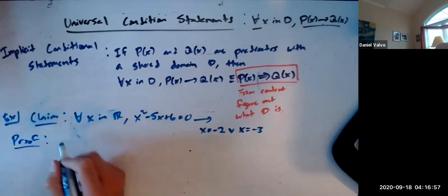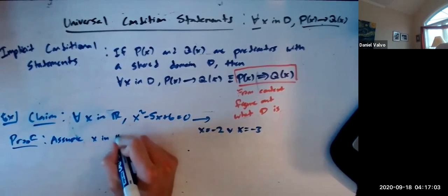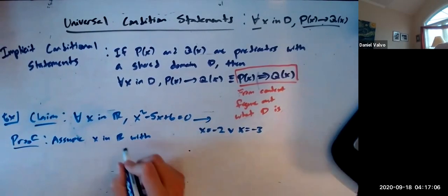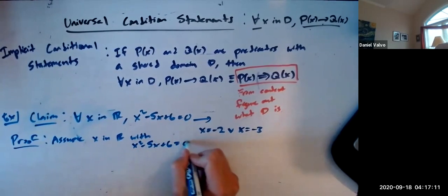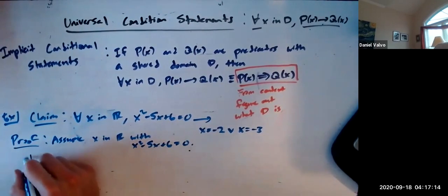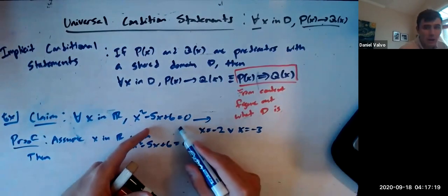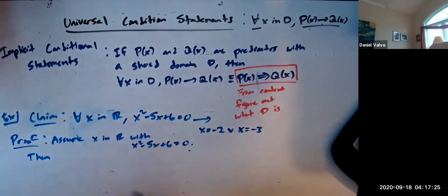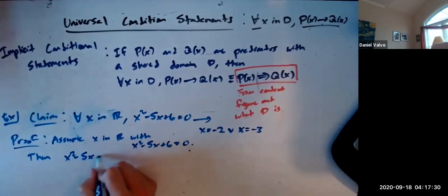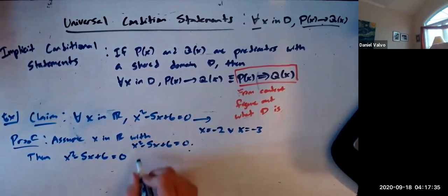The way you prove it is you go, proof, assume x is in R with x squared minus 5x plus 6 equals 0. Then, what you're doing here is you're assuming that the hypothesis is true, and then showing that the conclusion must be true, because that's how you prove an if-then statement.